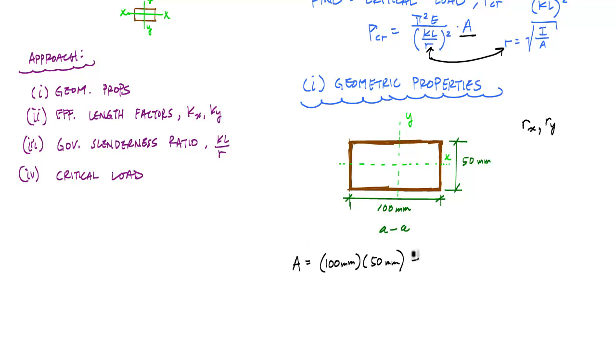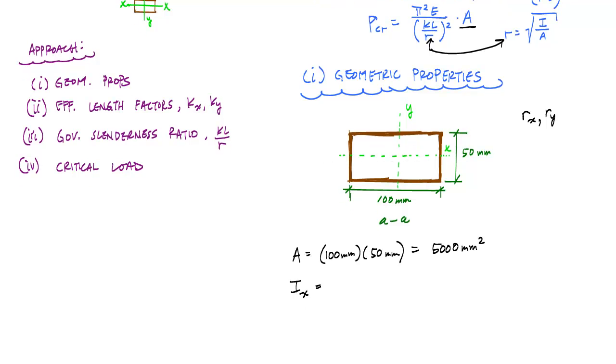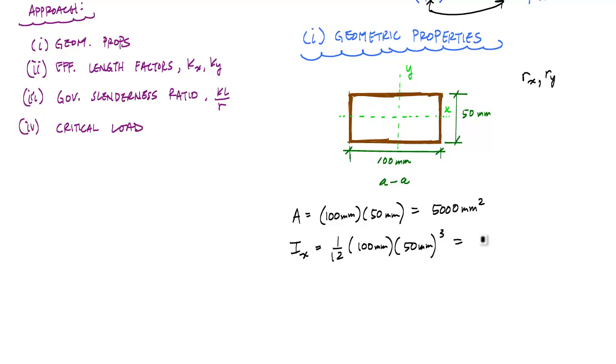The moment of inertia about the x-axis, this would be about this horizontal x here, which will be 1/12th base times the height cubed. And this will come out to 1.042 times 10 to the 6 millimeters to the 4th. And then similarly, the moment of inertia about the y.